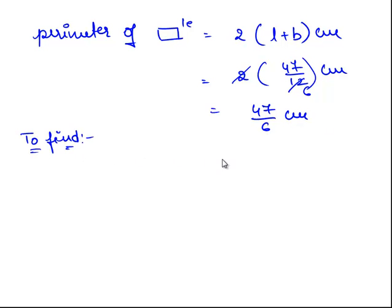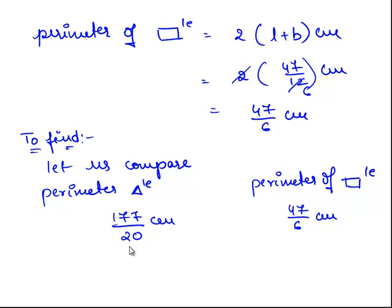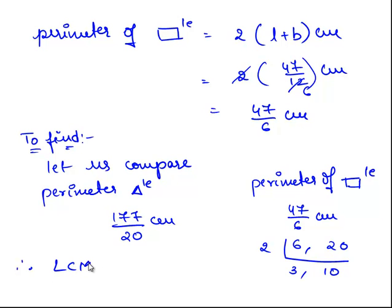Now we need to find whose perimeter is greater. Let us compare the perimeter of the triangle, which is 177/20 centimeters, with the perimeter of the rectangle, which is 47/6 centimeters. To compare these fractions, we need a common denominator. We find the LCM of 20 and 6. Since both are multiples of 2, we get LCM of 20 and 6 equal to 60.